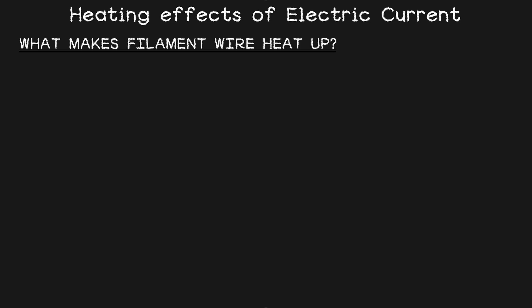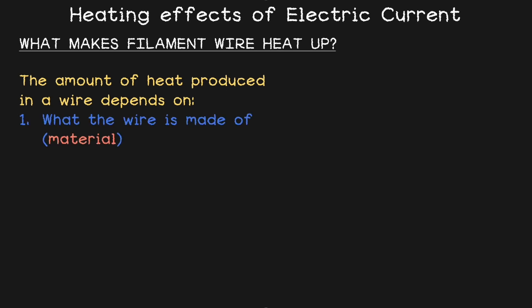So let's try to understand what makes the filament wire heat up. Well, actually it's the material of the wire that provides certain resistance to the electric current which results in the heating. If you really think about it, the amount of heat produced in a wire depends on first its material, what the wire is made of, how long the wire is, in other words the length of it, and how thick or thin it is, in other words thickness. So if you want to summarize this, material, length and thickness of the wire determine how much heat it produces.